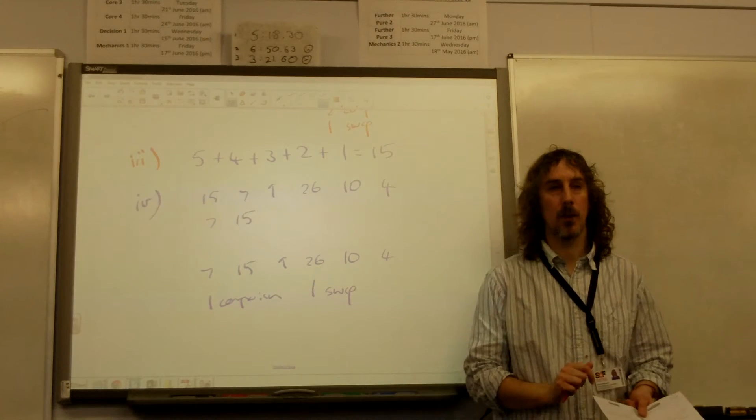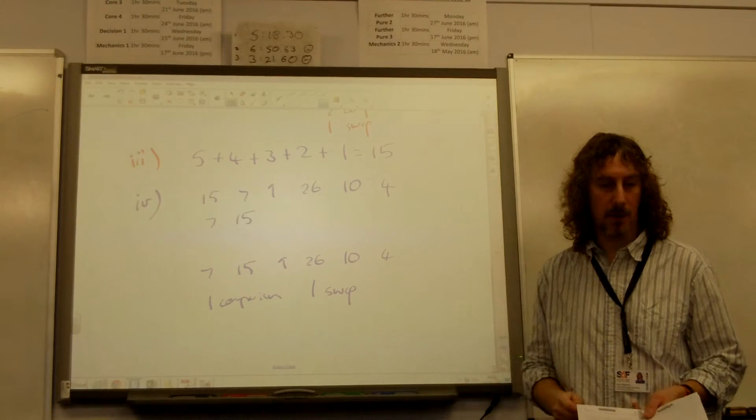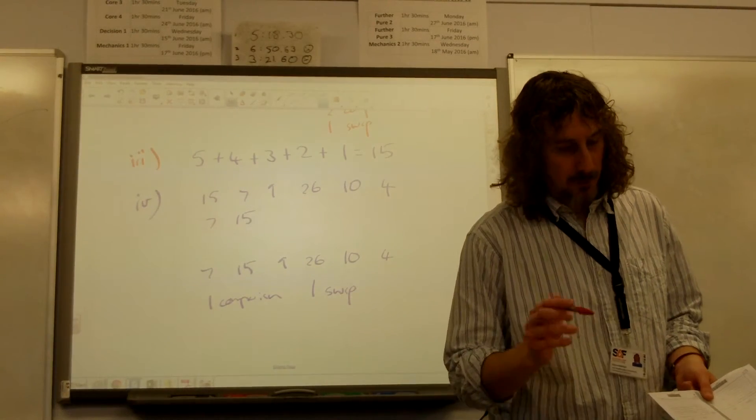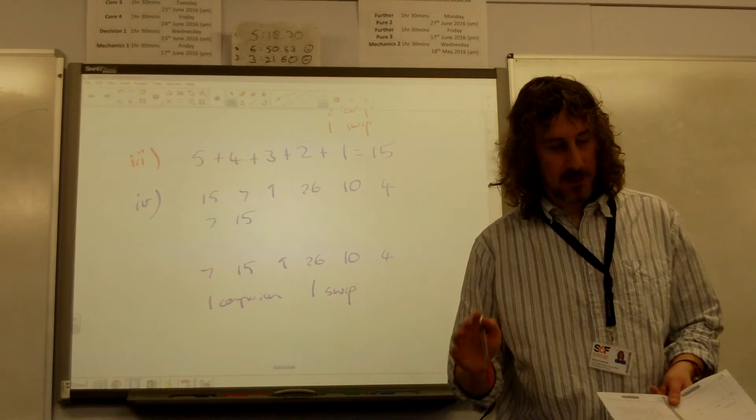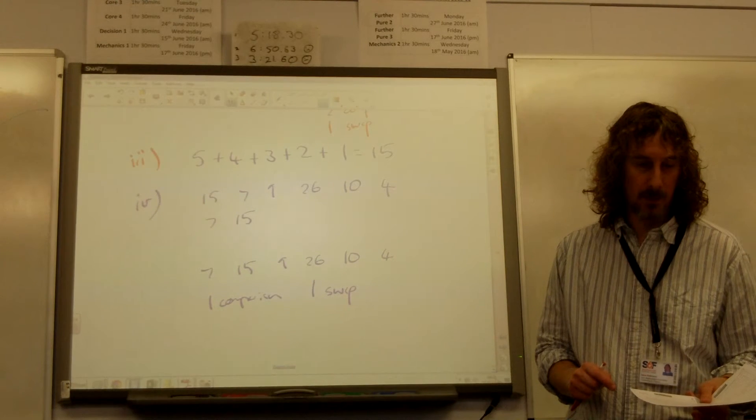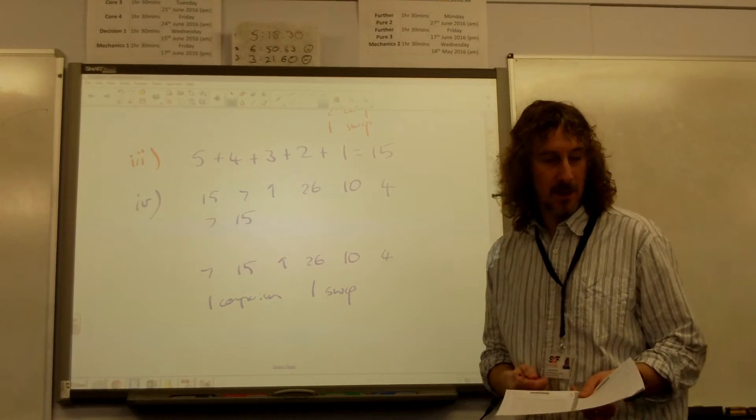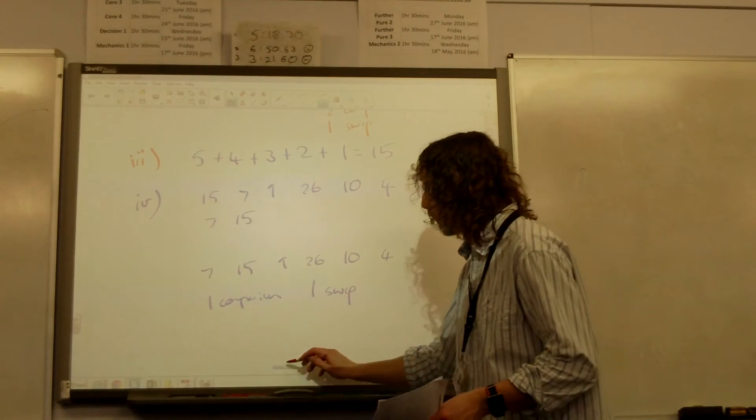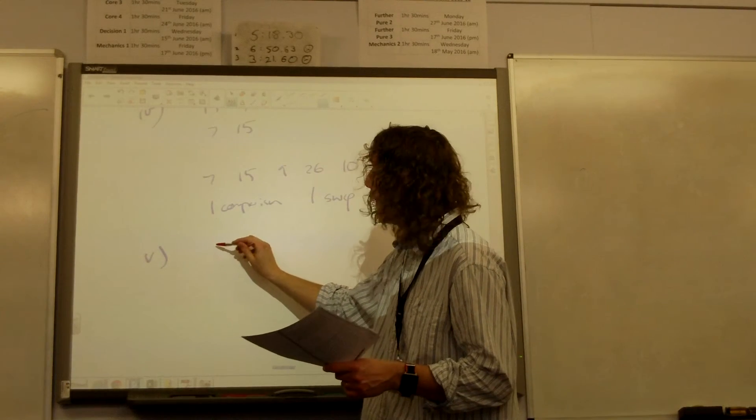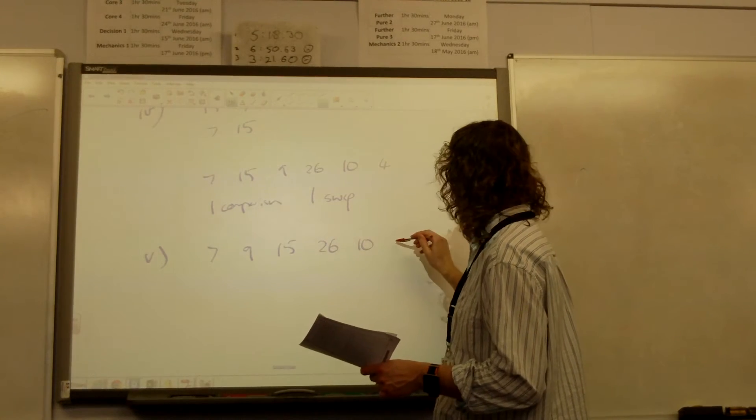Then shuttle sort, you start at the beginning and you just work your way through to shuffle anything back into place. Then the question says after three passes, the list is given: 7, 9, 15, 26, 10, 4. It's the same deal that we had earlier. They're giving it at a point part way through. And then it says write down the list that results at the end of the fourth pass. So after the third pass, the list said 7, 9, 15, 26, 10, 4.